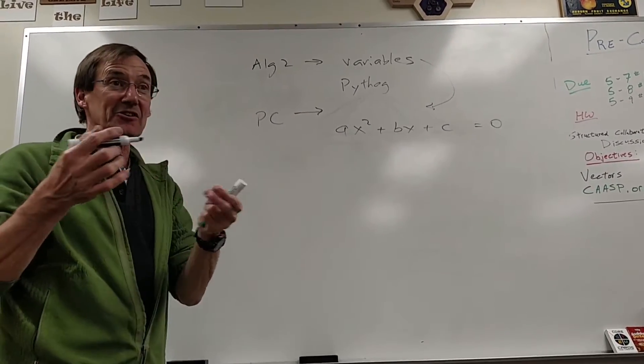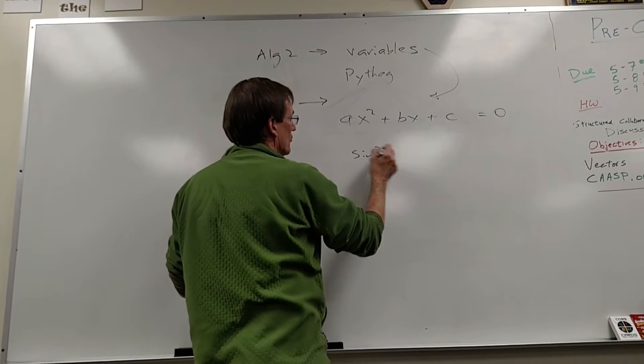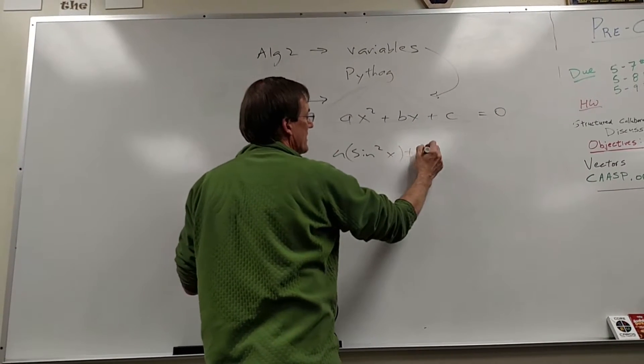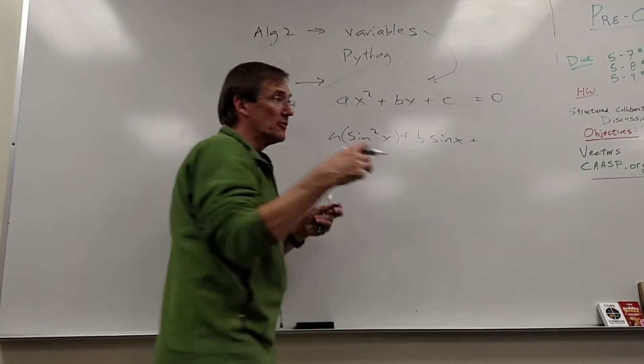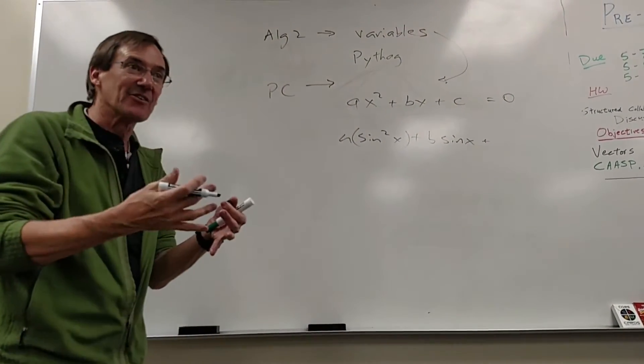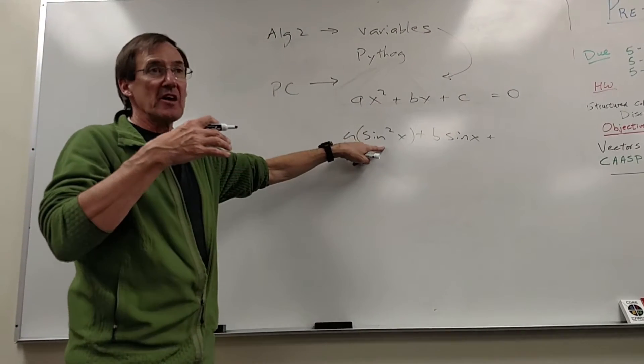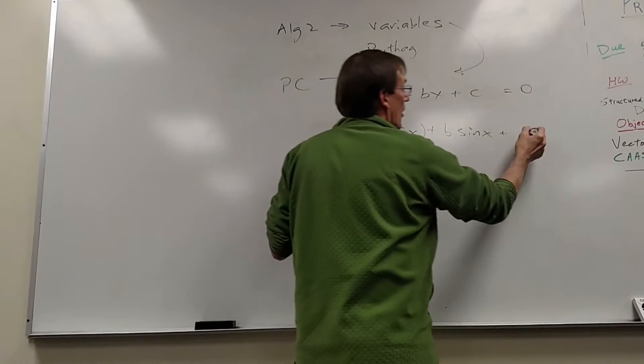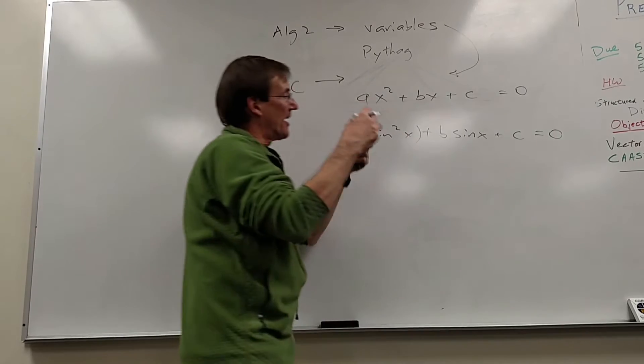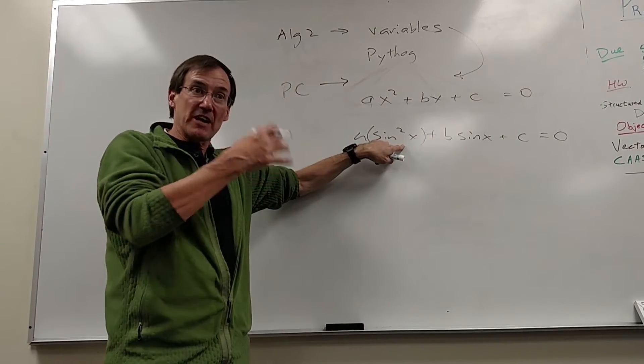And now in pre-calculus, you're doing that, but instead of x, you have sine x or sine squared x. So you're actually doing this right now in solving those triangles and trying to figure out what the angle is. The law of cosines when you've got the ambiguous triangle, so you've got, all of a sudden, you've got a quadratic equation that instead of having x's in it, has trig functions in it.